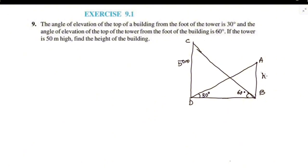Now, this is the height of the building — we need to find it. We will use triangle CDB to find the length BD, and then use triangle ABD to find the height AB.